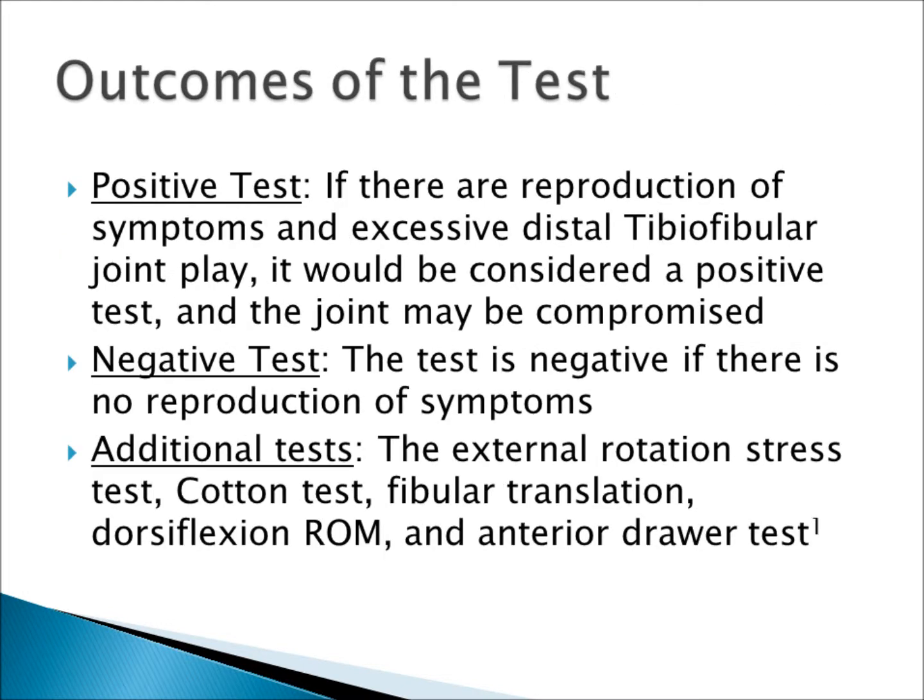A positive test is if there is a reproduction of symptoms and excessive distal tibial-fibular joint play, indicating the joint may be compromised. The test is considered negative if there is no reproduction of symptoms. Additional tests to perform in order to rule in a syndesmosis injury include the external rotation stress test, the cotton test, fibular translation, dorsiflexion range of motion, and the anterior drawer test.